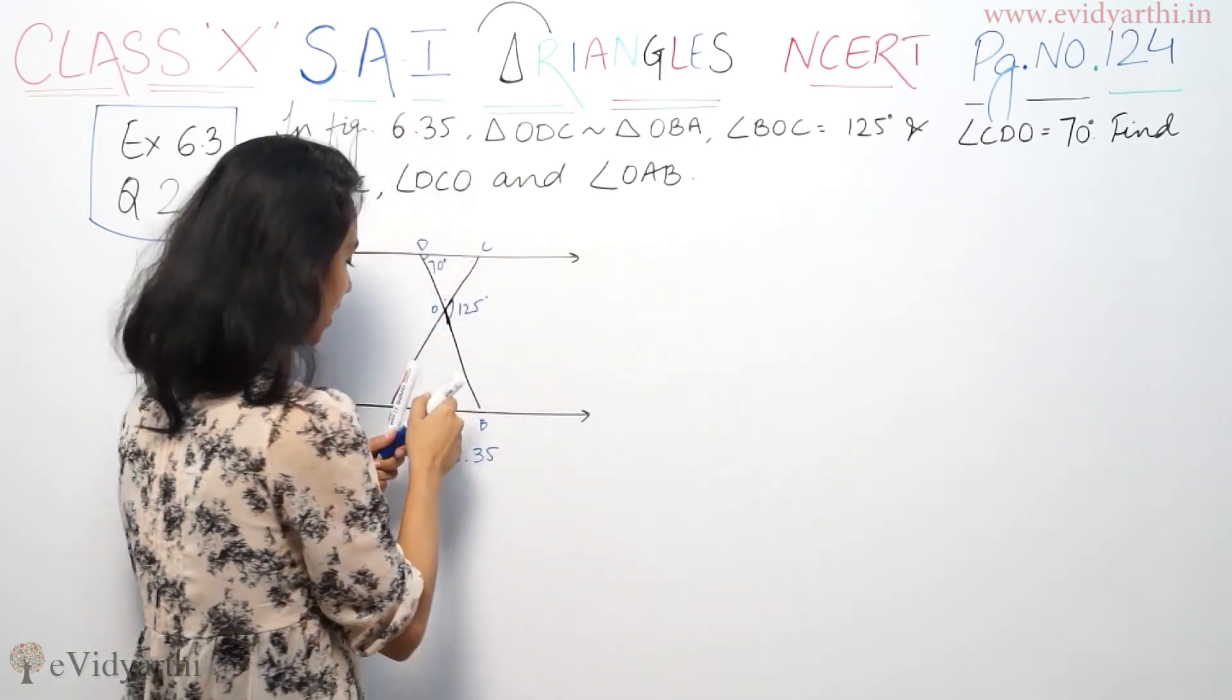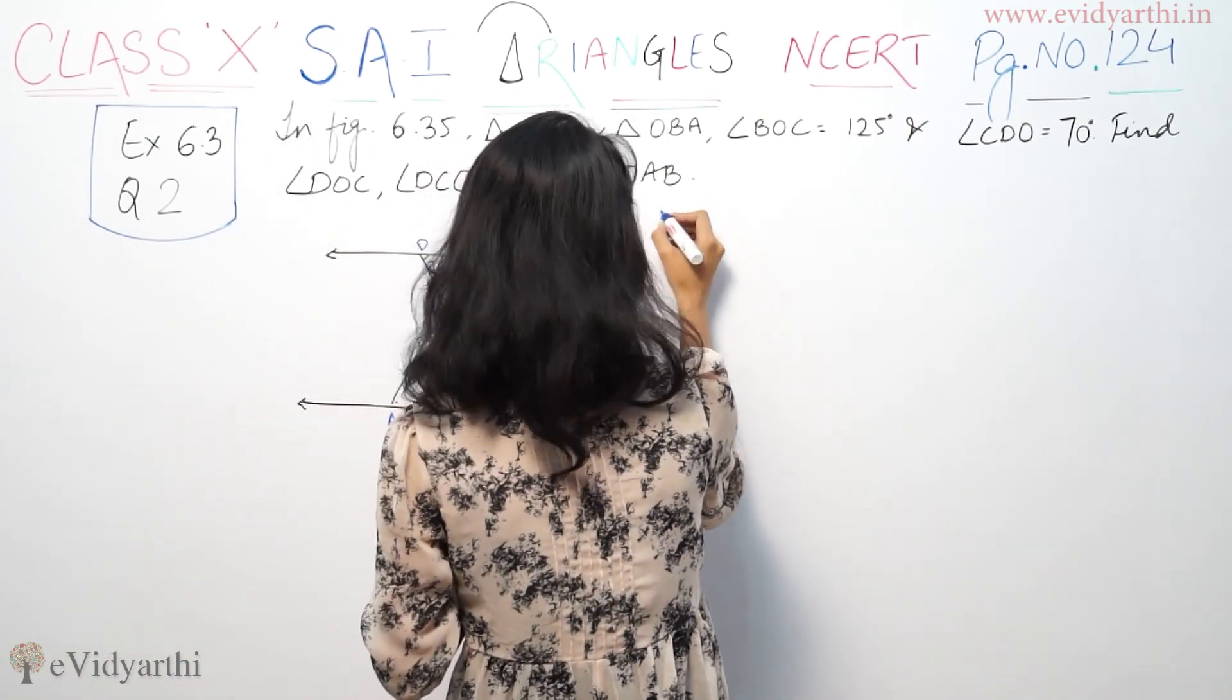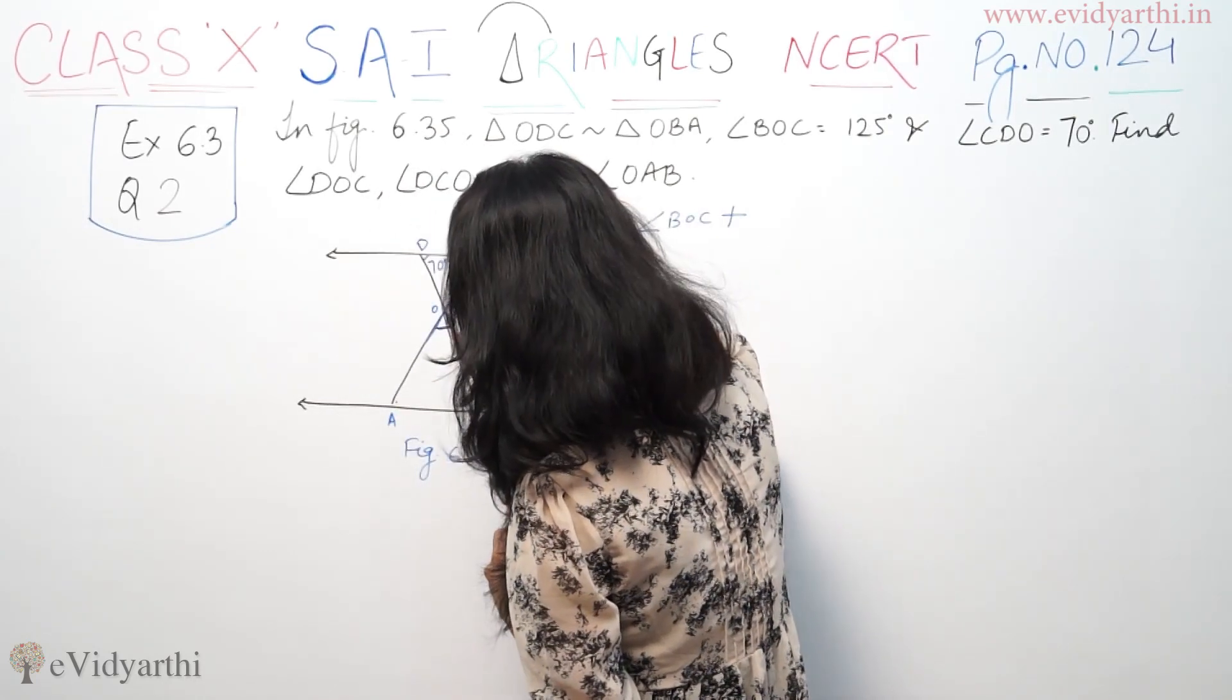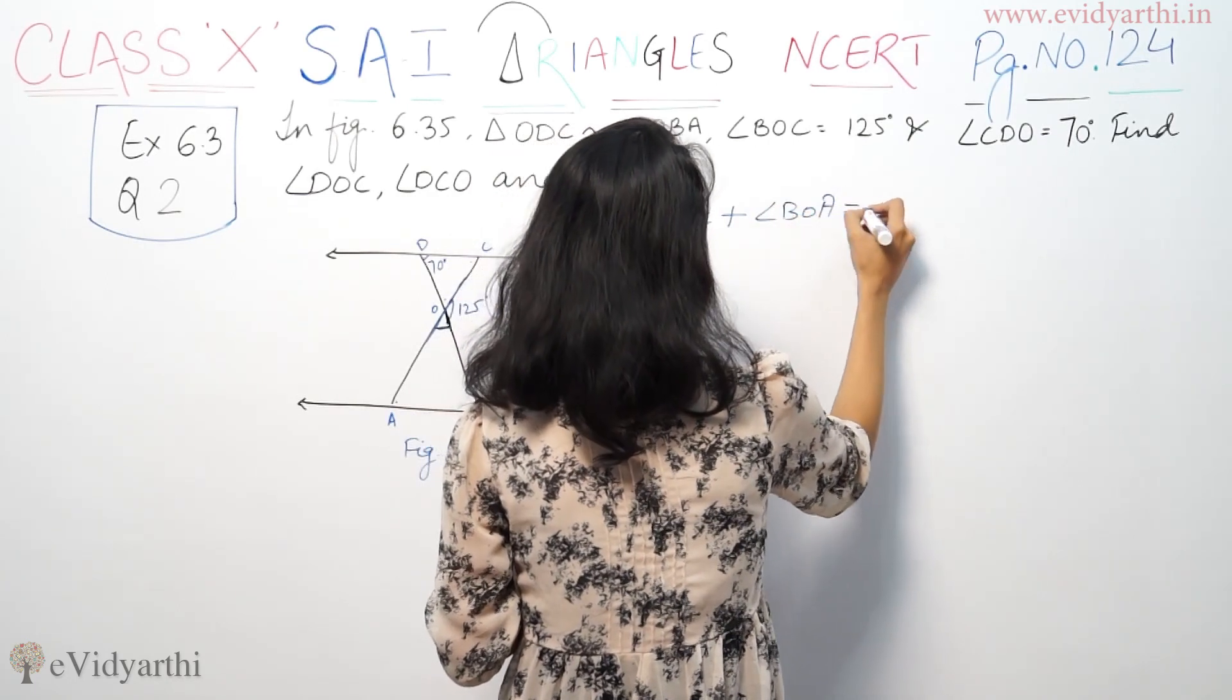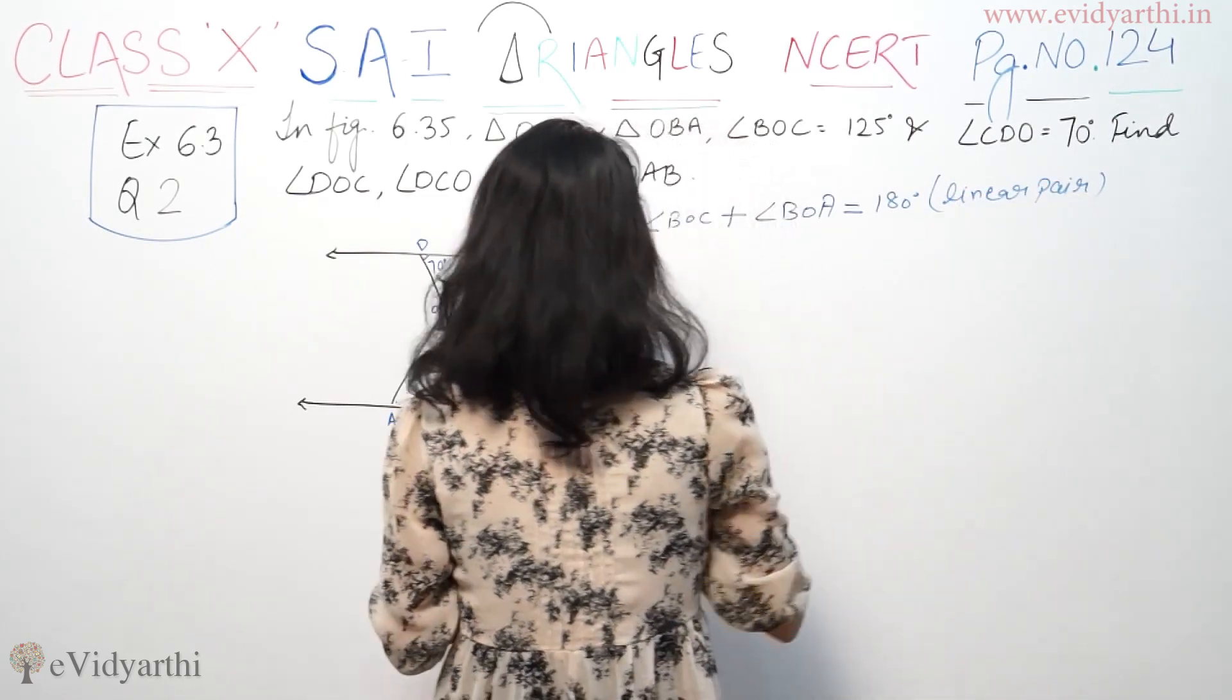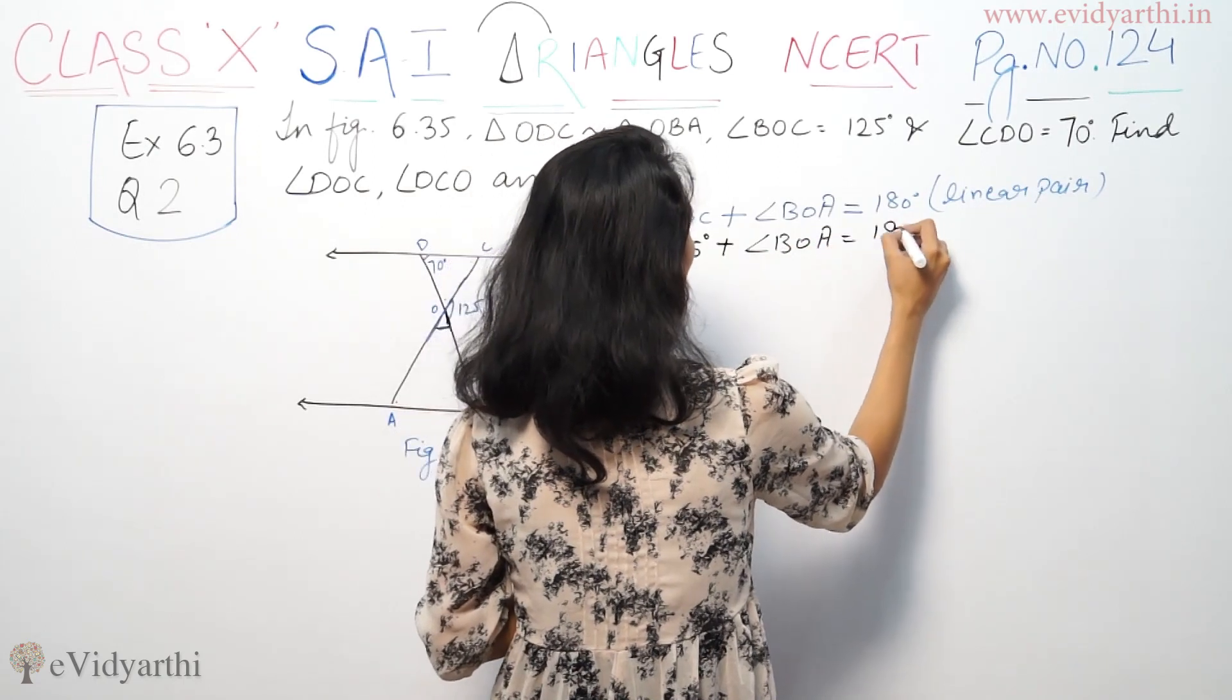Now, this is 125 and this is a straight line. Angle BOC plus angle BOA is equal to 180 degrees, linear pair. So, it is 125 degrees plus BOA equals 180 degrees.